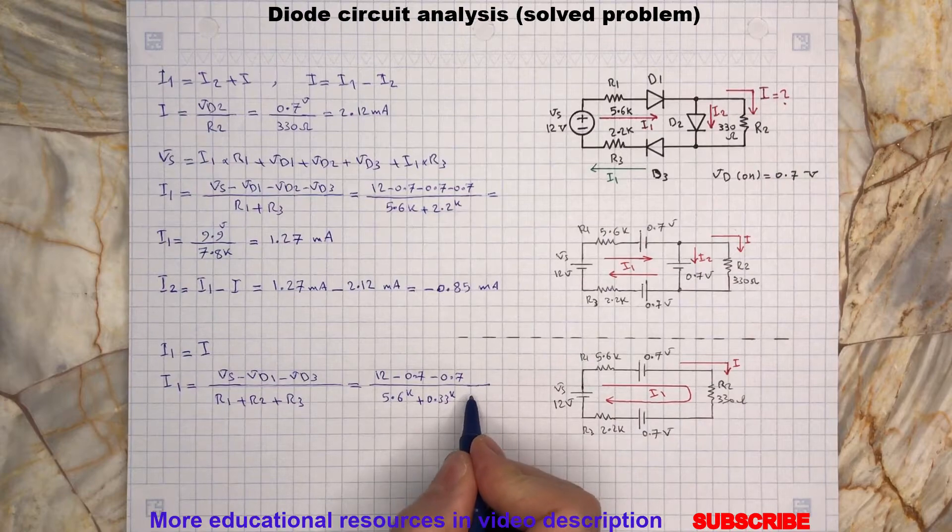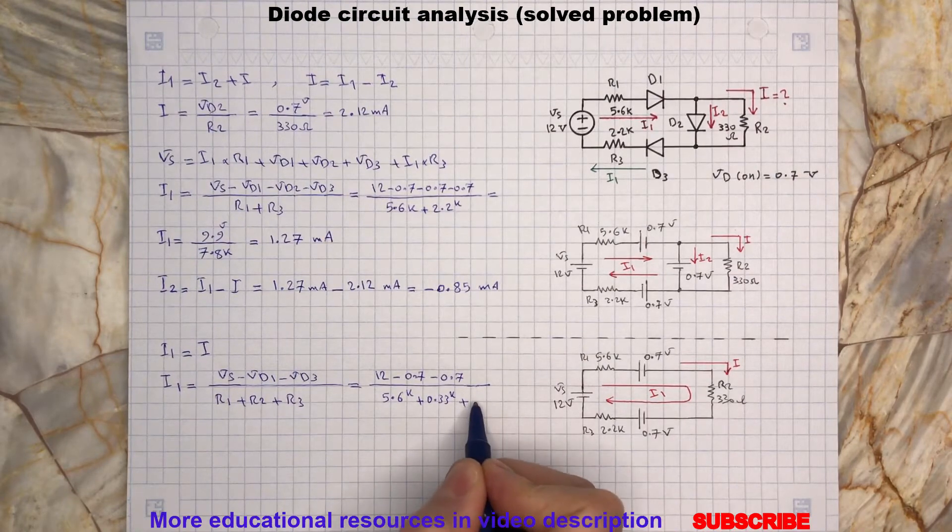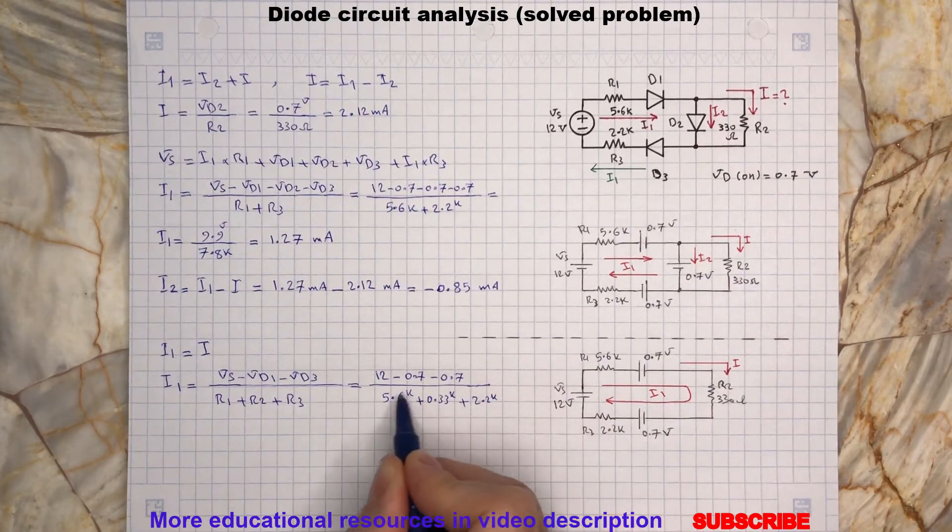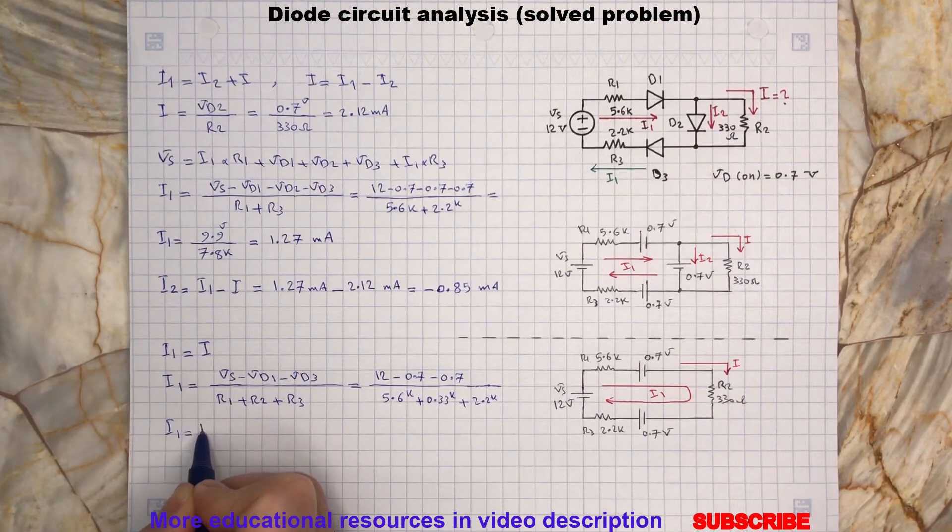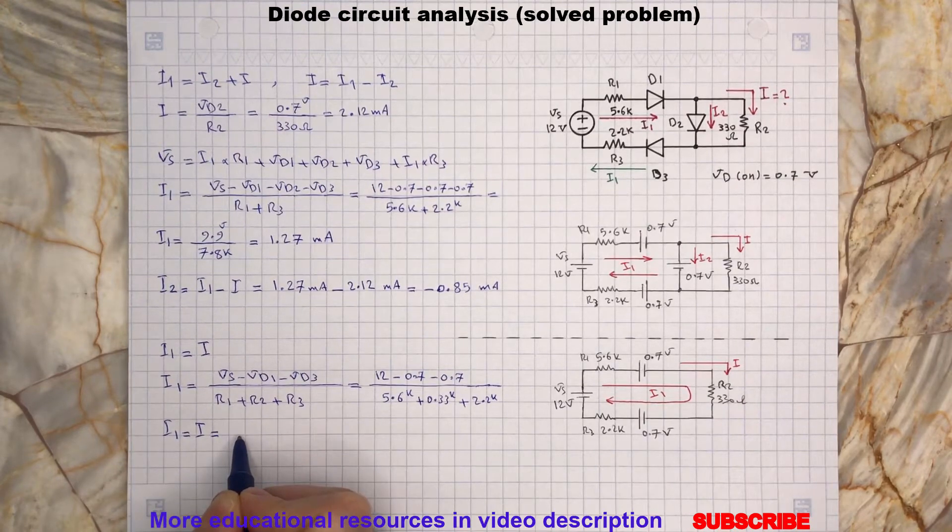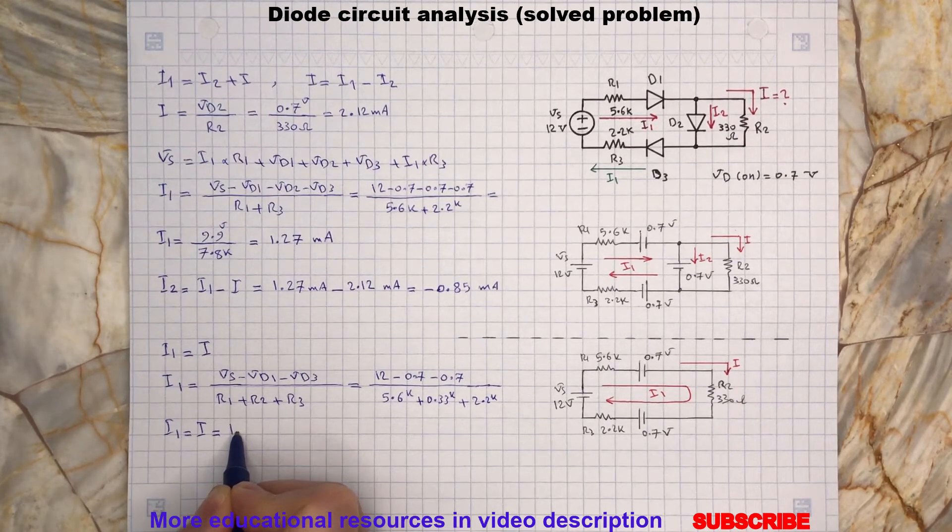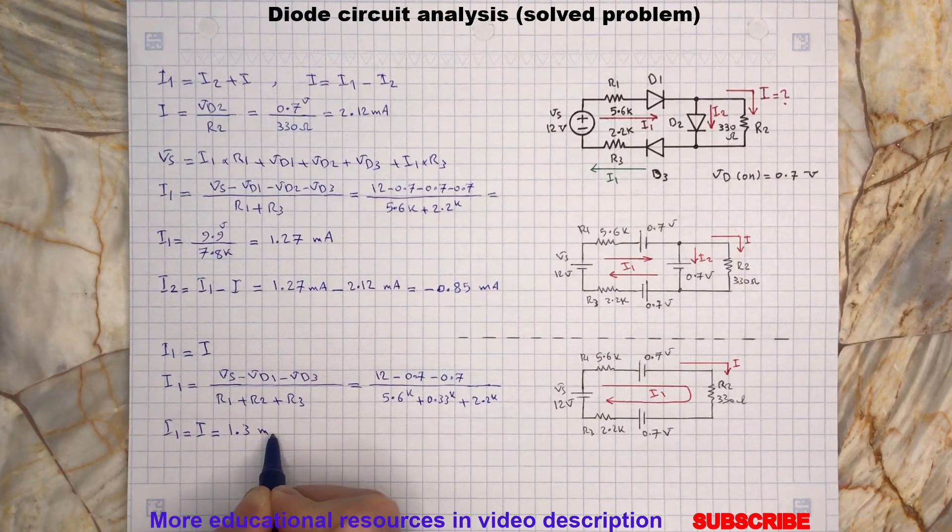Plus 2.2, all are in kilohms, so I1 equals I is 1.3 milliamps.